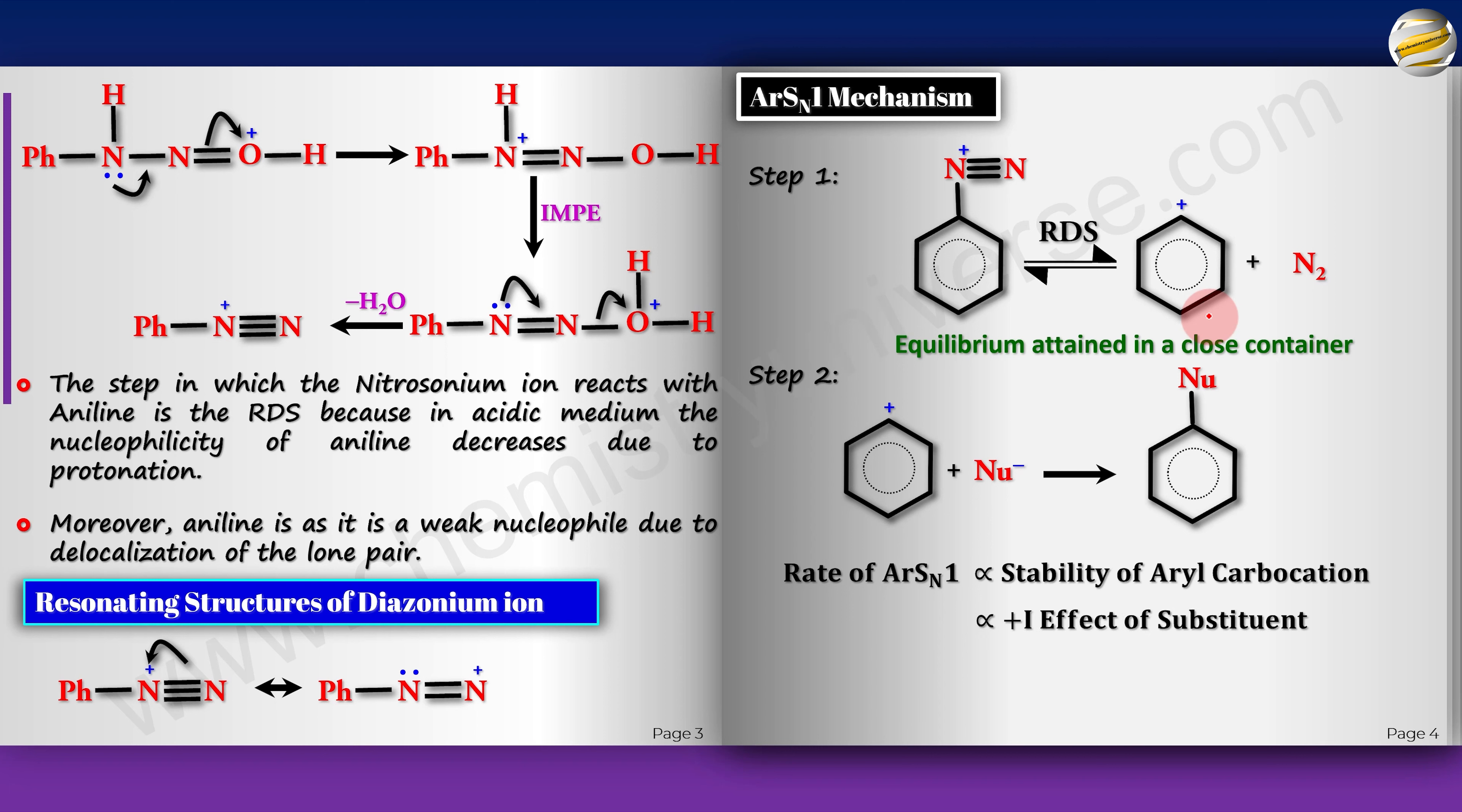If you have releasing groups by +I effect, as I always told you, whenever something comes on the SP2 orbital, it is only the inductive effect that is operative. Anything that has a +I effect, doesn't matter +M or anything, only +I is going to stabilize it. The stability of the aryl carbocation is independent of the resonance or hyperconjugation as the positive charge is on an empty SP2 orbital. No mesomeric effect or hyperconjugation has to be seen.